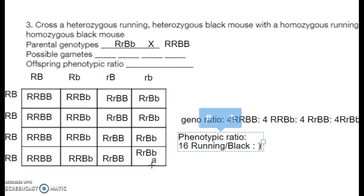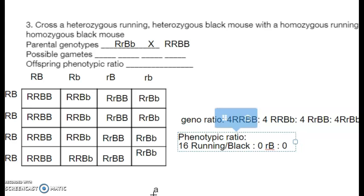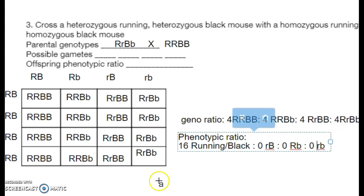Zero running brown, zero waltzing black, zero waltzing brown. It's 100%, or 16 out of 16, running black — they all show the dominant trait.